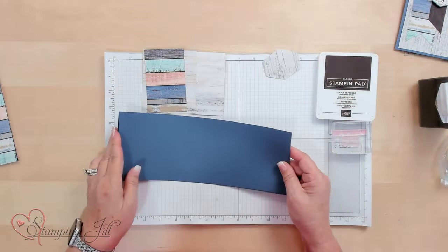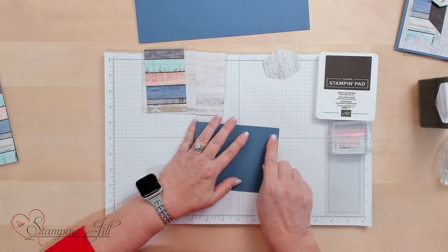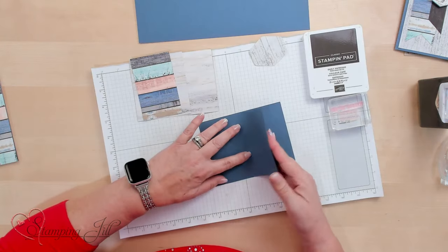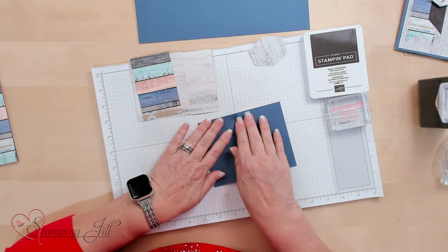I'm just taking the 4 1⁄4 x 11 cardstock and I'm folding it. This is Misty Moonlight and I'm going to fold it back on itself. This is one of my favorite layouts.